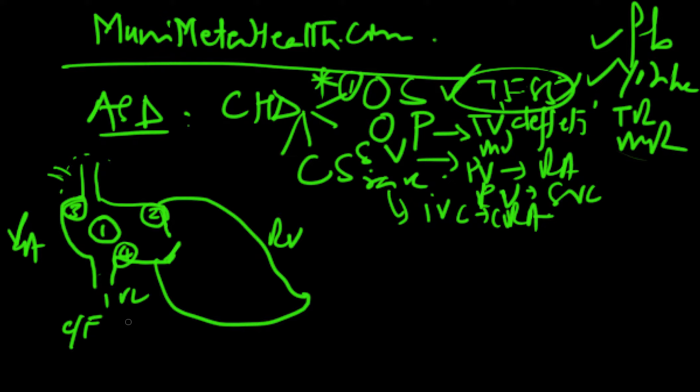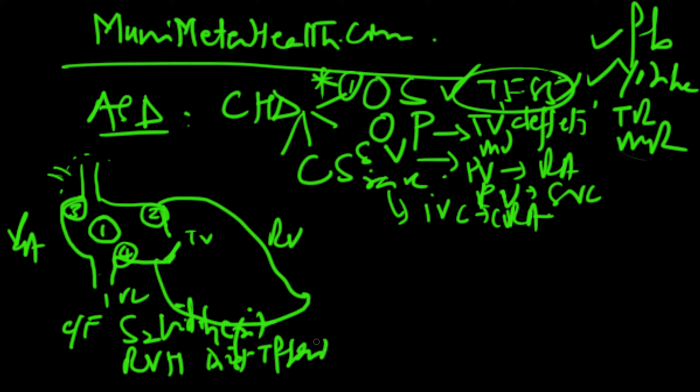The classic findings are obviously you'll have a widely split second sound, which is the second sound of the heart. There might be signs of right ventricular heave. There will be murmurs from either an increased flow through the tricuspid valve. You will have a flow which will be a diastolic murmur through the tricuspid valve. That's the tricuspid flow murmur, almost mimicking like a tricuspid stenosis, but because of the increased flow.